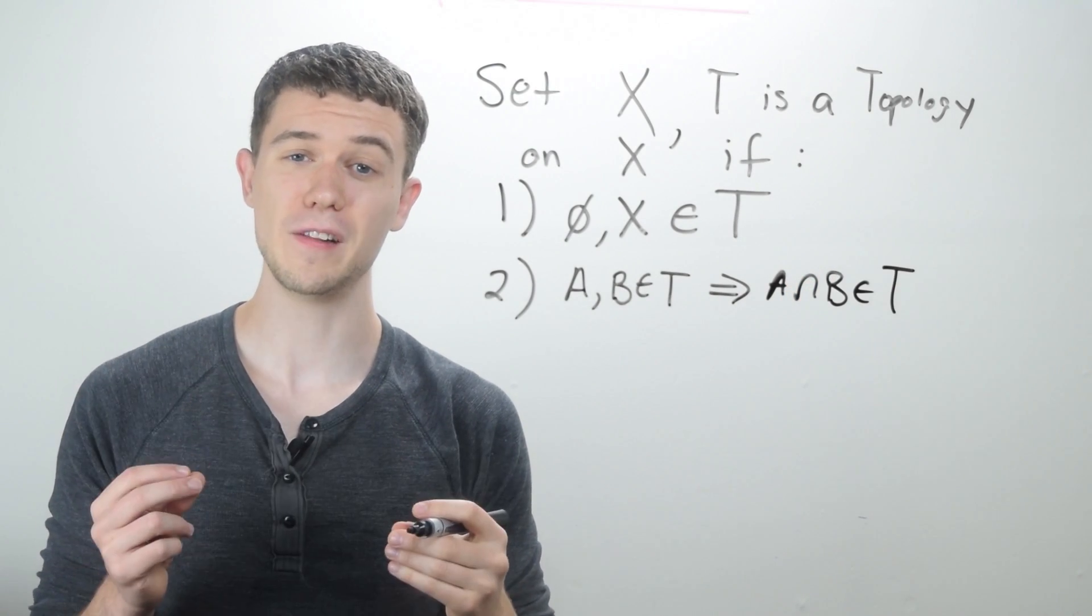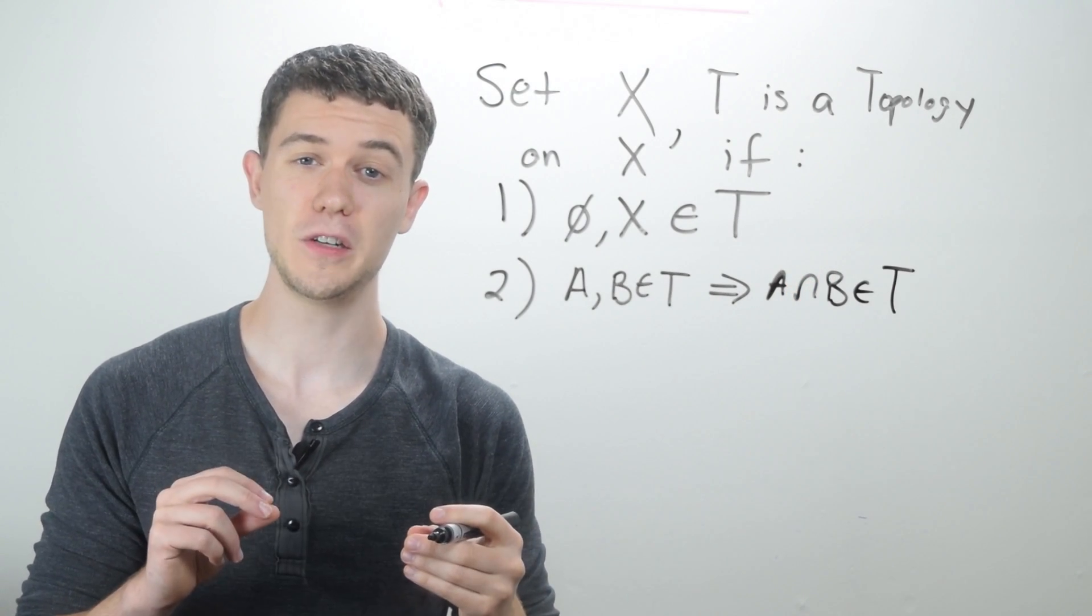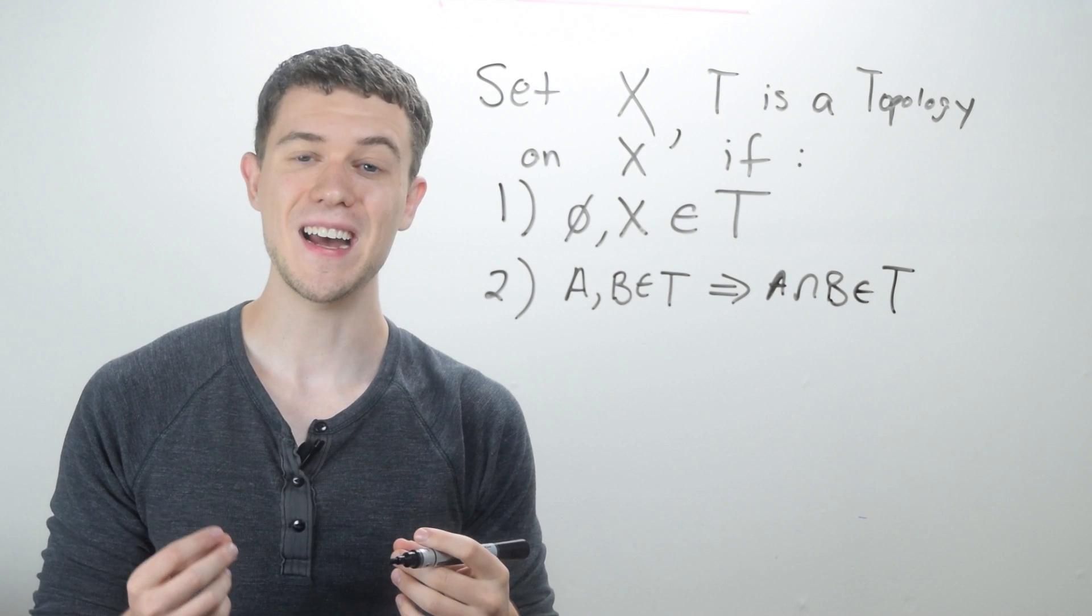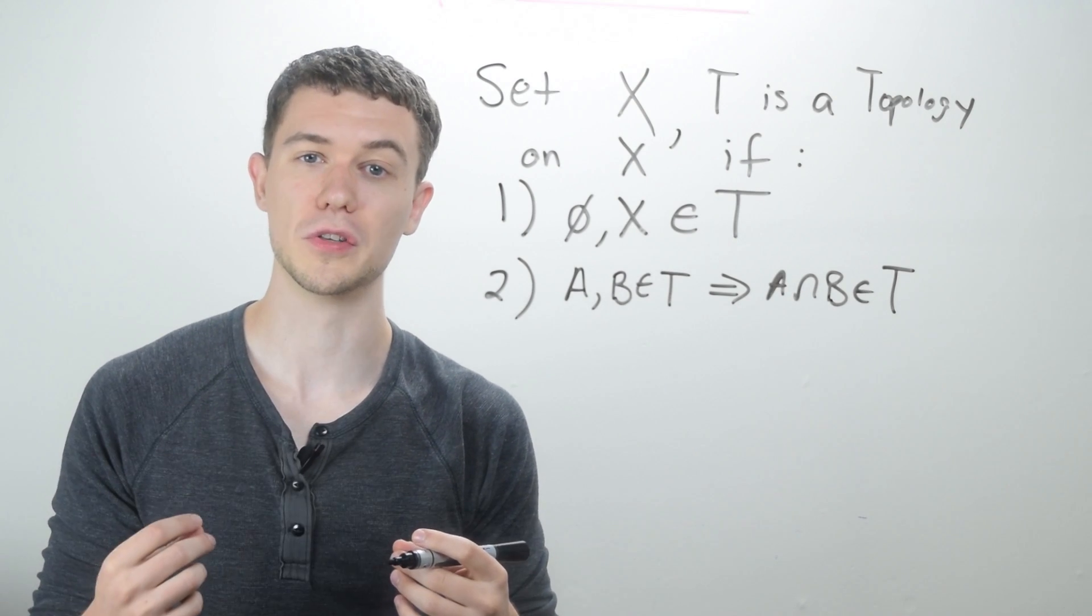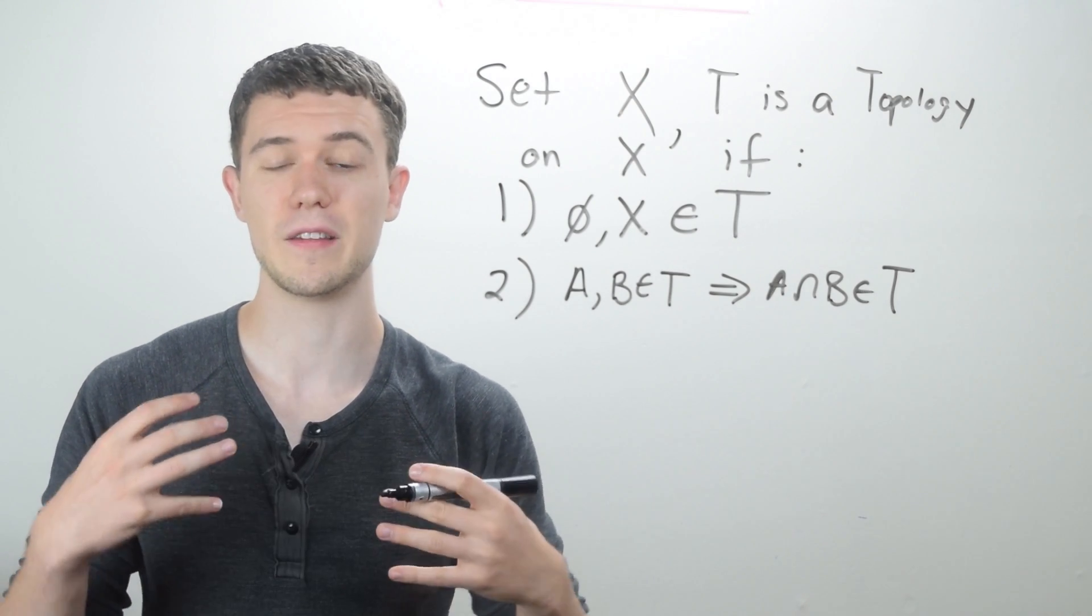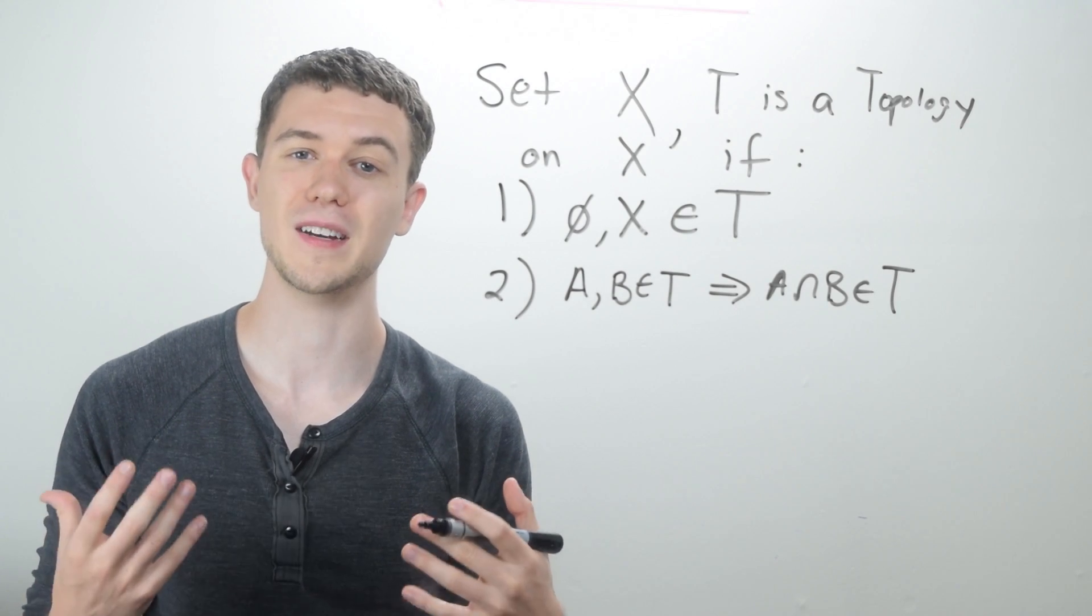If you have two elements, A and B, in the topology, and remember these are actually sets, then their intersection is also in the topology. So we say that the topology is closed under finite intersection.